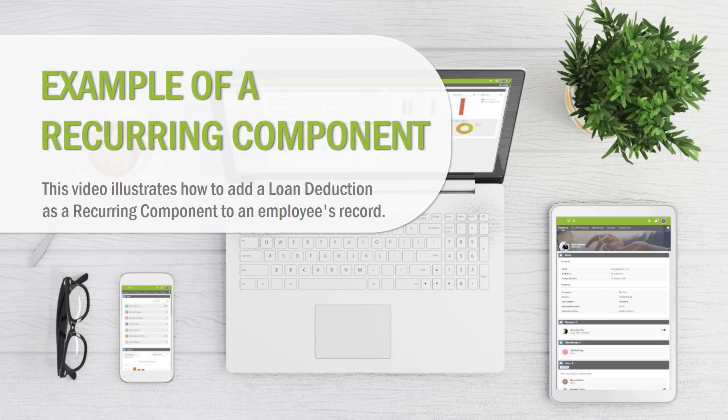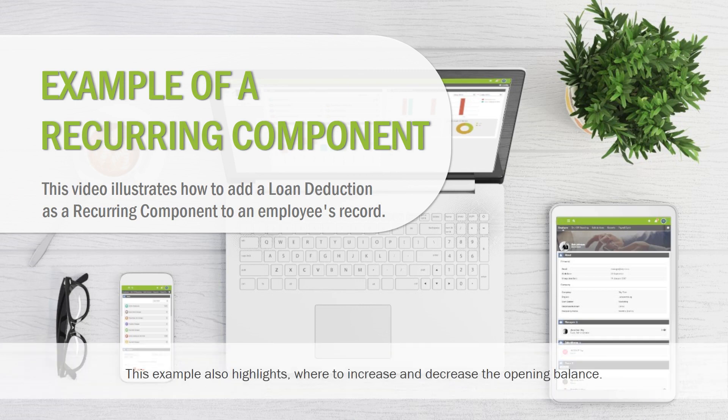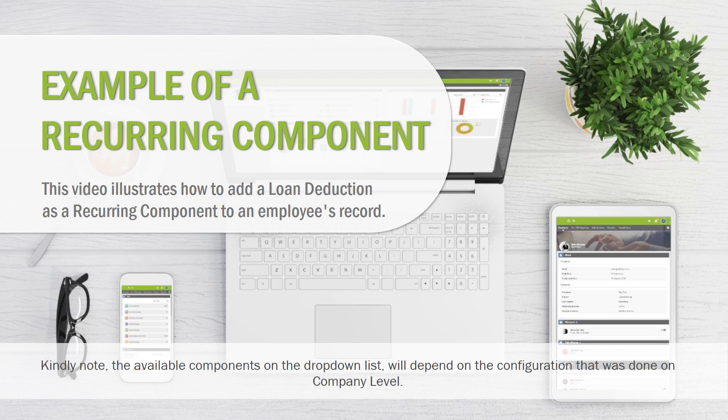This video illustrates how to add a loan deduction as a recurring component to an employee's record. It also highlights where to increase and decrease the opening balance. Kindly note the available components on the drop-down list will depend on the configuration that was done on company level.